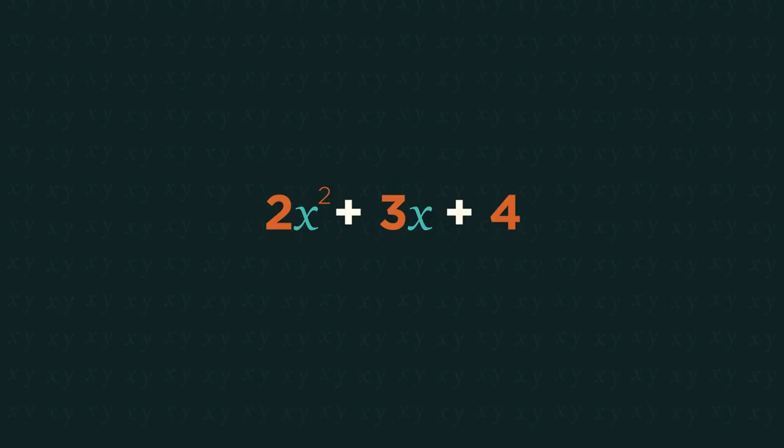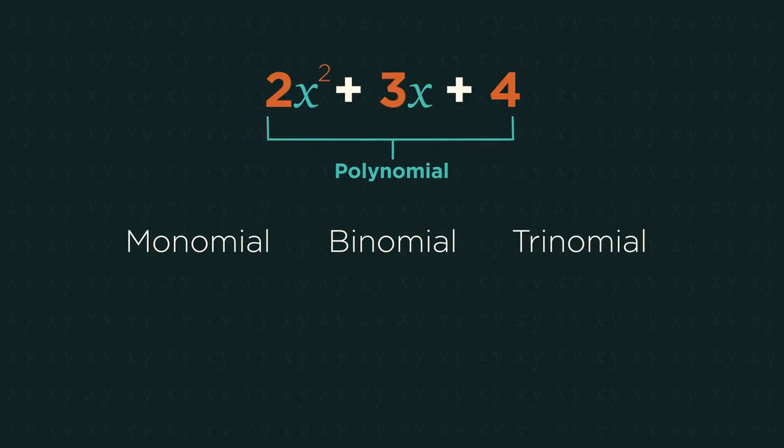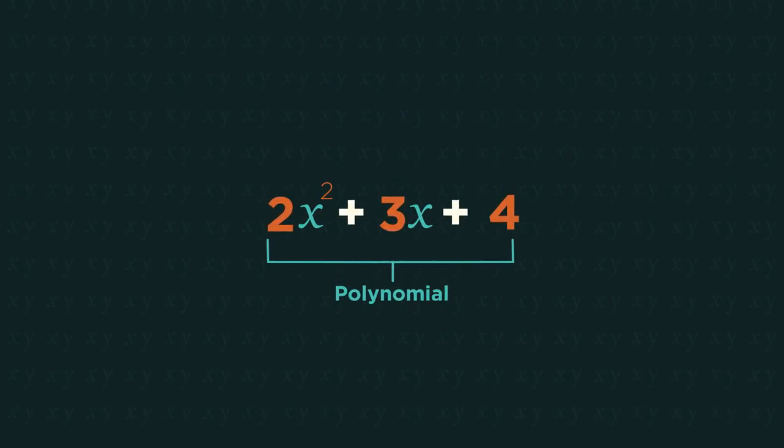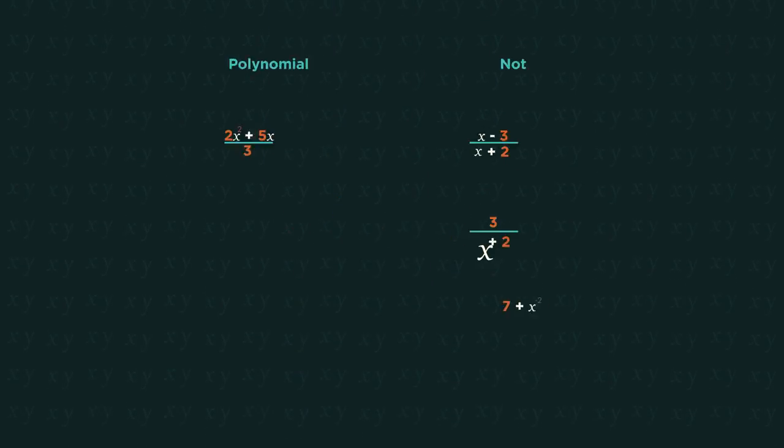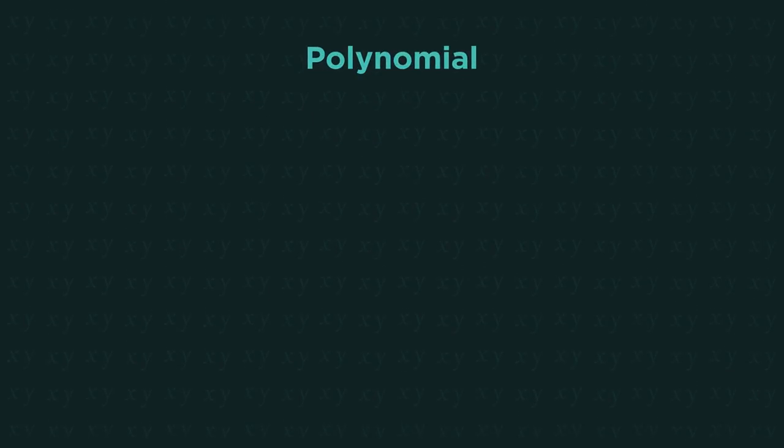We also need to know what the word polynomial means and the different types of polynomials. A polynomial can have constants, variables, coefficients, and exponents that are zero or higher. Polynomials can never be divided by a variable. This last one isn't a polynomial because the exponent is negative. Polynomials can only have positive exponents.